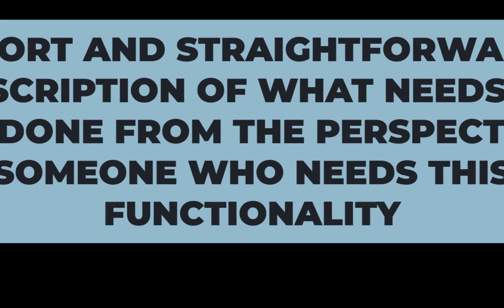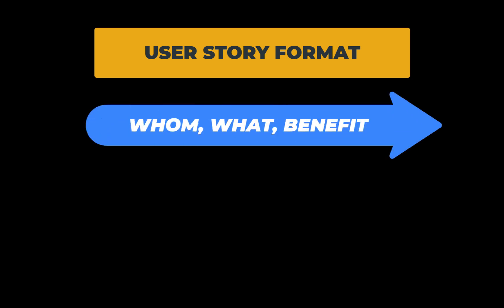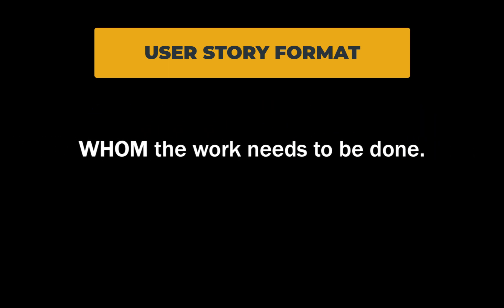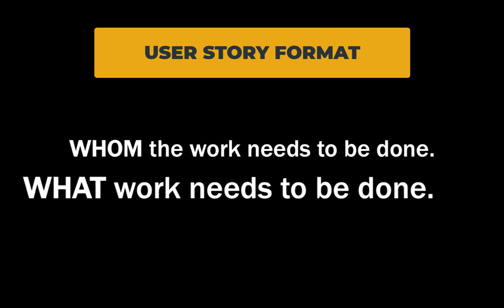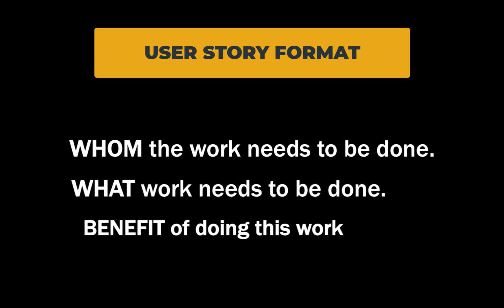Keep in mind that user stories are short and details are added later on. A user story format consists of three components: whom, what, and benefit — for whom the work needs to be done, what work needs to be done, and the benefit of doing this work.